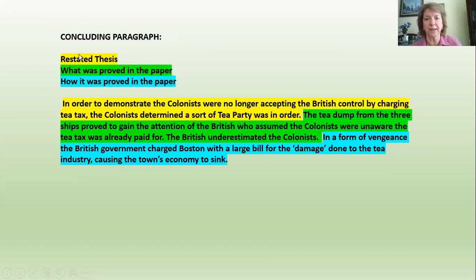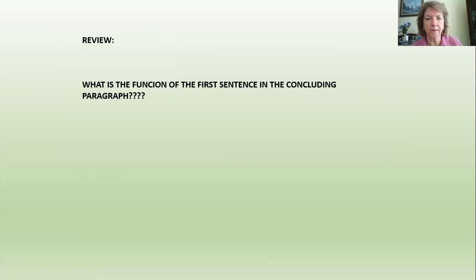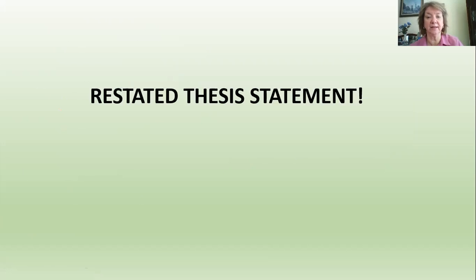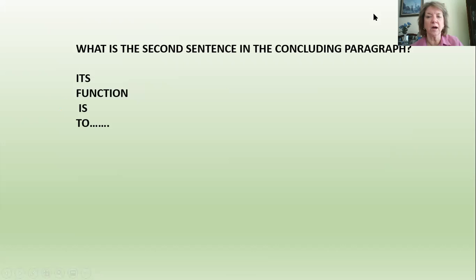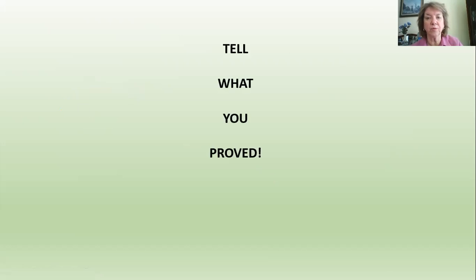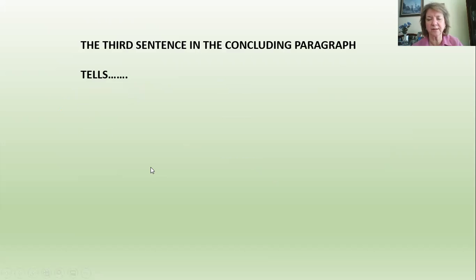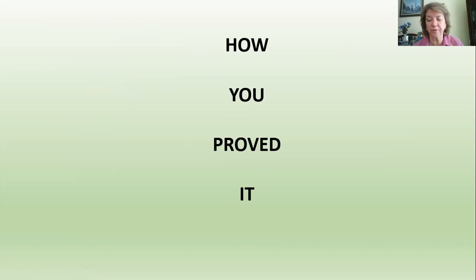It's really simple — three sentences, just like the introductory paragraph has three sentences, the concluding paragraph does as well. Let's review: what's the function of the first sentence in the concluding paragraph? Restating the thesis statement. What is the second sentence? Its function is to tell what you proved. And the third sentence in the concluding paragraph tells how you proved it.